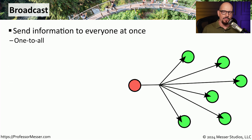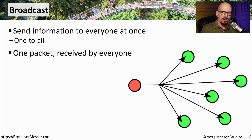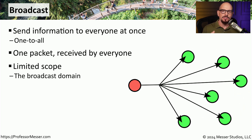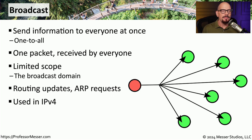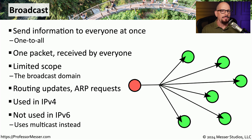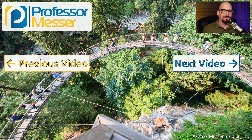If you want to send a frame to everyone on your network, then you'll want to send a broadcast. This is a one-to-all relationship where a single packet is sent out and everyone on the network receives that packet. The scope of this is limited to your local broadcast domain, so there's no way for a broadcast frame to appear everywhere else on the internet. This type of communication is best fit for something like routing updates or ARP requests. Although this is commonly found with IPv4, with IPv6 we removed broadcasts completely and went to a multicast form of communication instead.